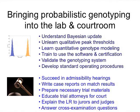Now that the community seems to have been given a mandate by NIST to bring probabilistic genotyping into the lab and courtroom to preserve more of the evidence information in biological samples, there's a task in front of you. In the lab, you need to understand Bayesian update, unlearn everything you learned about qualitative peak thresholds — that's harder for people over 25 — and learn quantitative genotype modeling. Whatever software you get, you have to train to use it, get certified, validate the genotyping system, and develop standard operating procedures. Then a year or two later you're ready to go to court, succeed in admissibility hearings, write case reports, prepare trial materials, educate trial attorneys, and explain the LR clearly to jurors and judges.